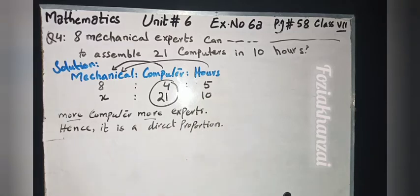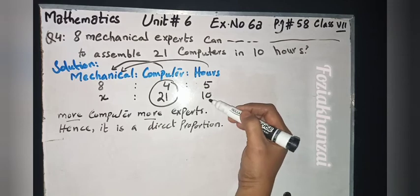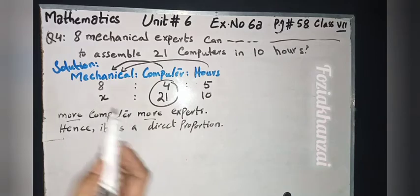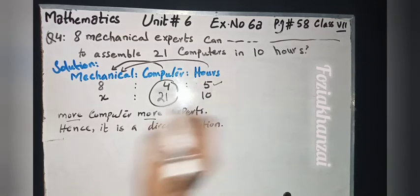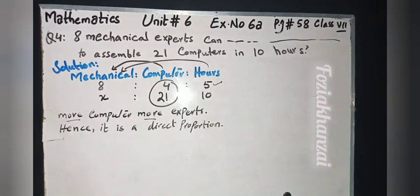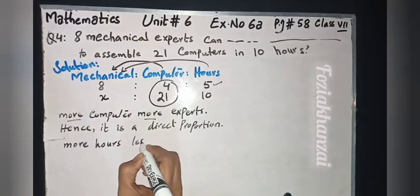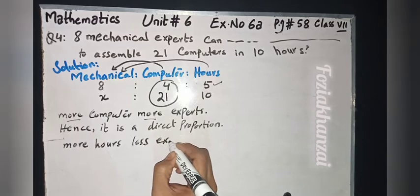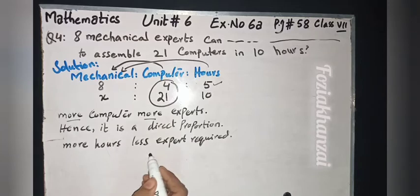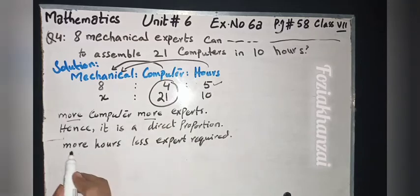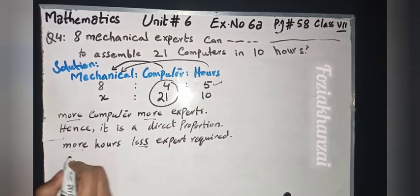Now identify the second proportion: 5 hours and 10 hours. Comparing 5 and 10 — more hours are given in the second statement. More hours means less mechanical experts required. So: more hours, less mechanical experts needed. More and less are opposite — increase and decrease — so this is an inverse proportion.